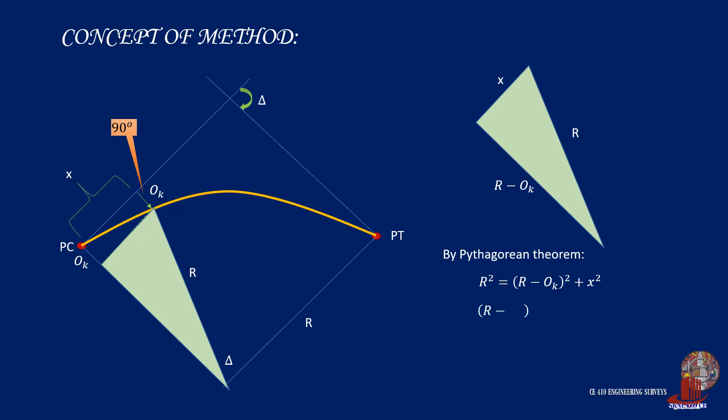Let's extract O sub k: isolate the term on one side, then take the root of both terms, leaving R minus O sub k is equal to the root of the quantity R squared minus X squared. From here, it is easy to identify that O sub k is equal to R minus the root of R squared minus X squared.